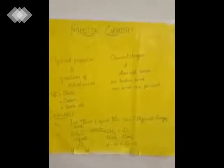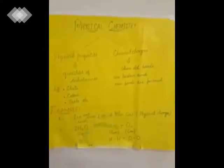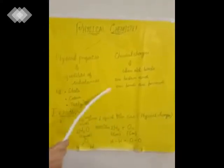What is a chemical change? A chemical change occurs when the old bonds are broken within the compound and new bonds are formed. That is actually the chemical change.